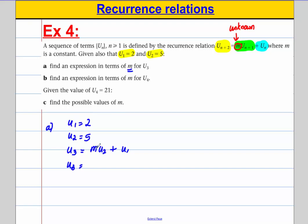So u3 is equal to m times u2, u2 is 5, so m times 5 we write as 5m plus u1 which is 2. And there we go, that there is our expression for u3 in terms of m.